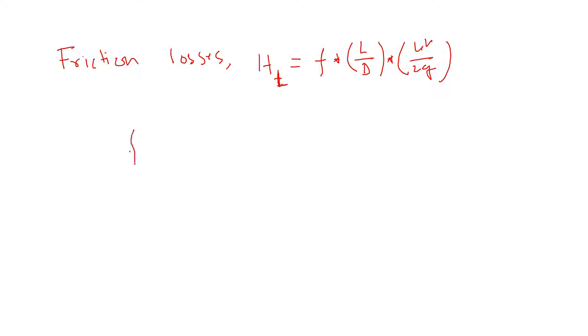The friction factor f is 64 over Reynolds number for laminar flow, and you find this from the Moody diagram for transition and turbulent flow. Use the Moody diagram for turbulent flow.